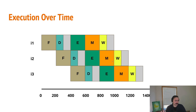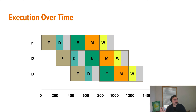So while one instruction is doing a write-back to the register file, another instruction could be accessing memory, another could be doing something with the ALU in the execute stage, another could be decoding an instruction, and another could be fetching an instruction from instruction memory. So we can get all of this parallelism, this overlap, and see a pretty good performance improvement.